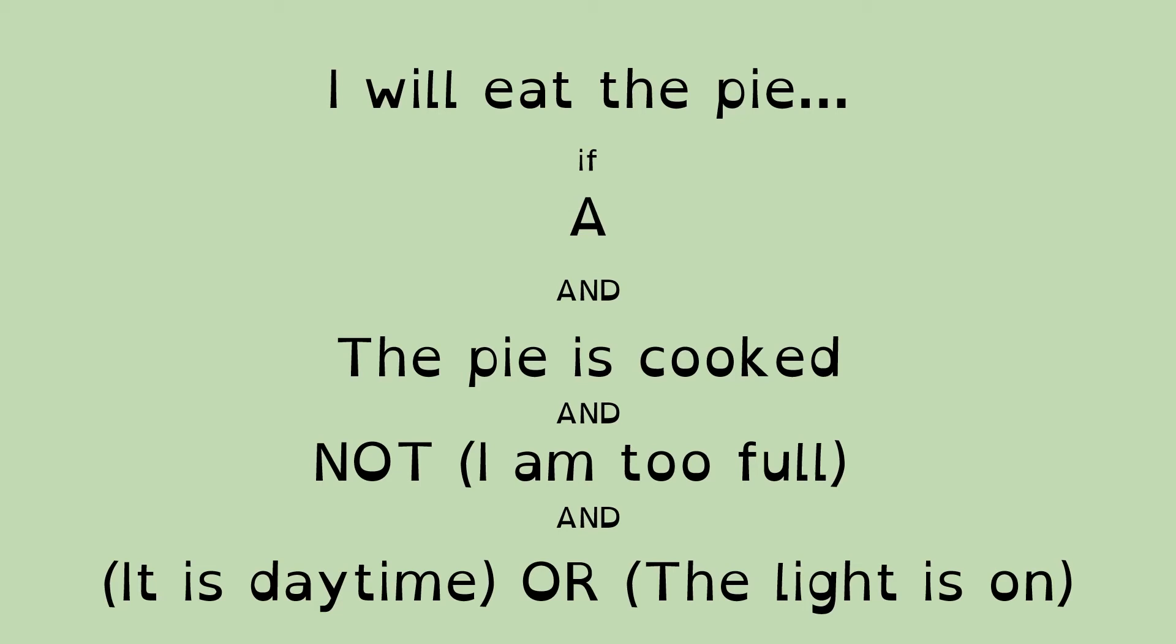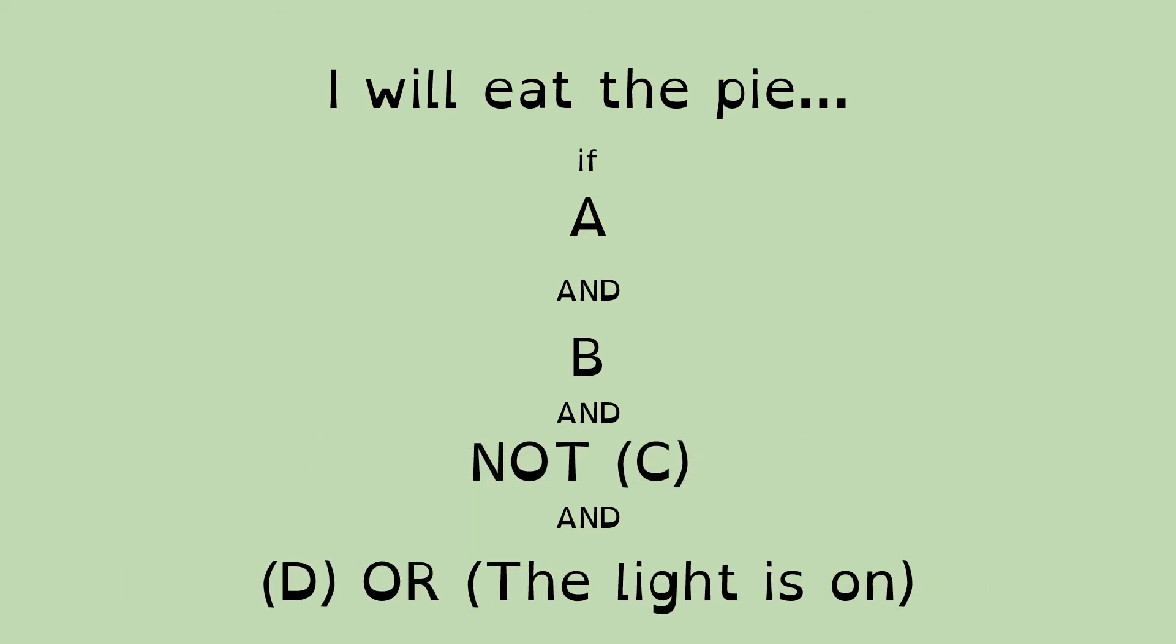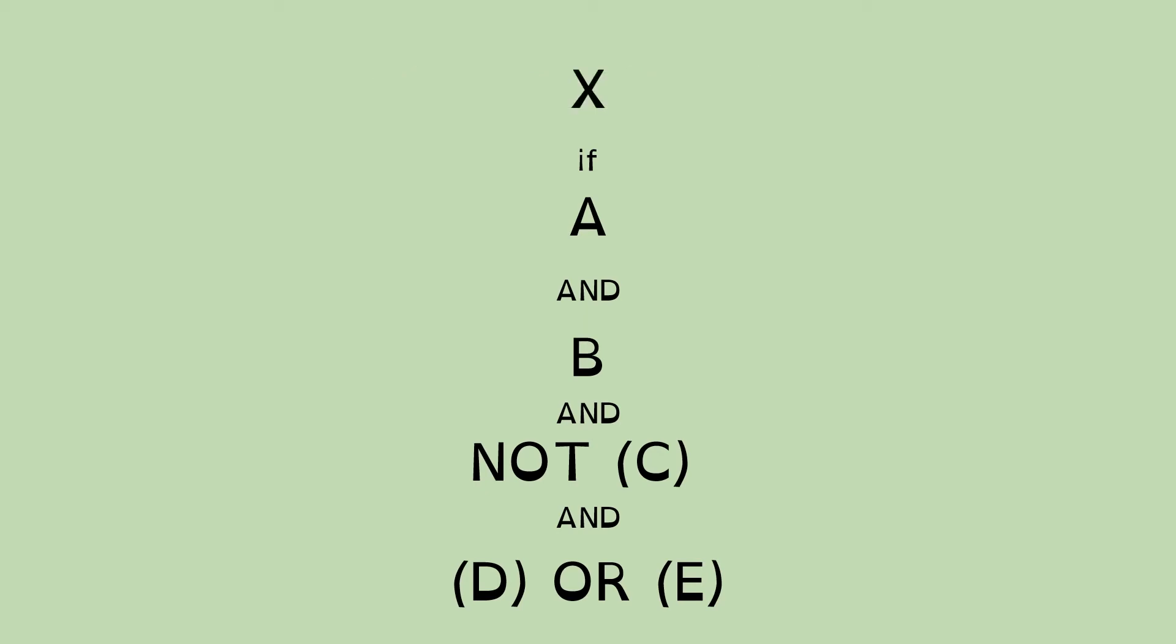I'm going to replace the pies in front of me with the letter A. We're going to replace the pies cooked with the letter B. I am too full is going to be replaced with C. It is daytime with D. And the light is on is replaced with E. And our overall outcome, I'm going to also give that a letter, and arbitrarily, I'm just going to call it X.